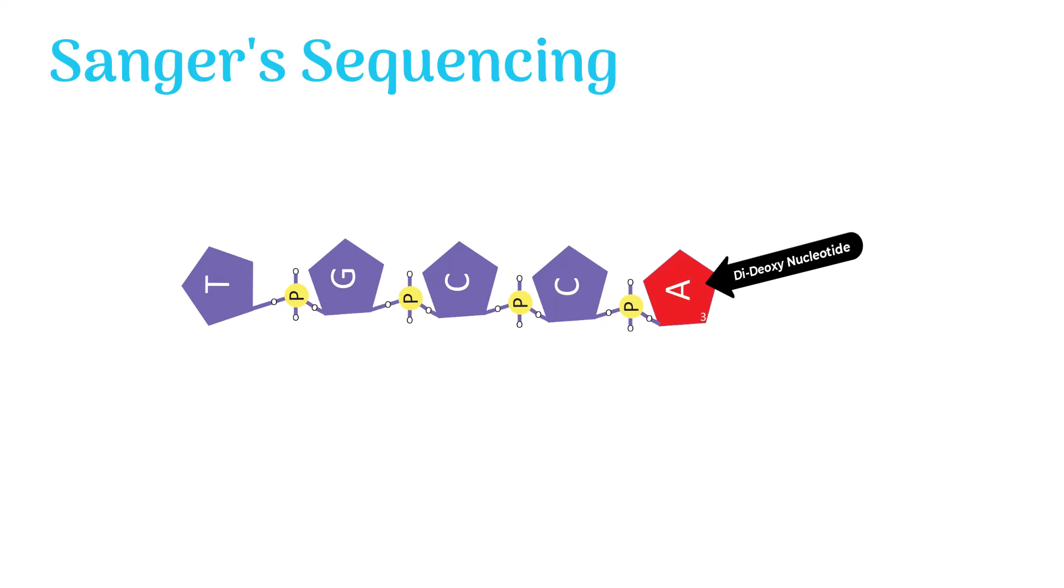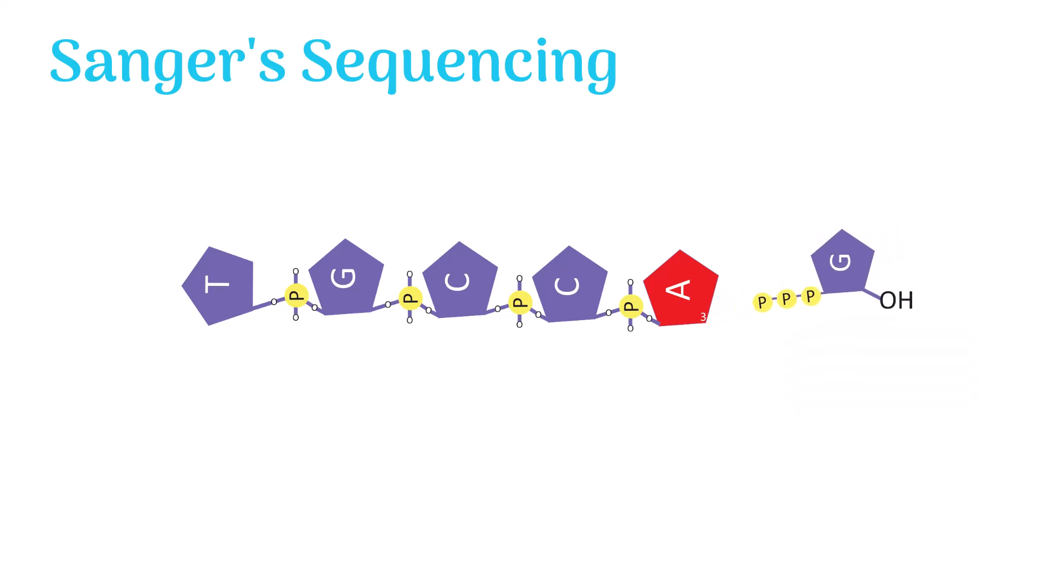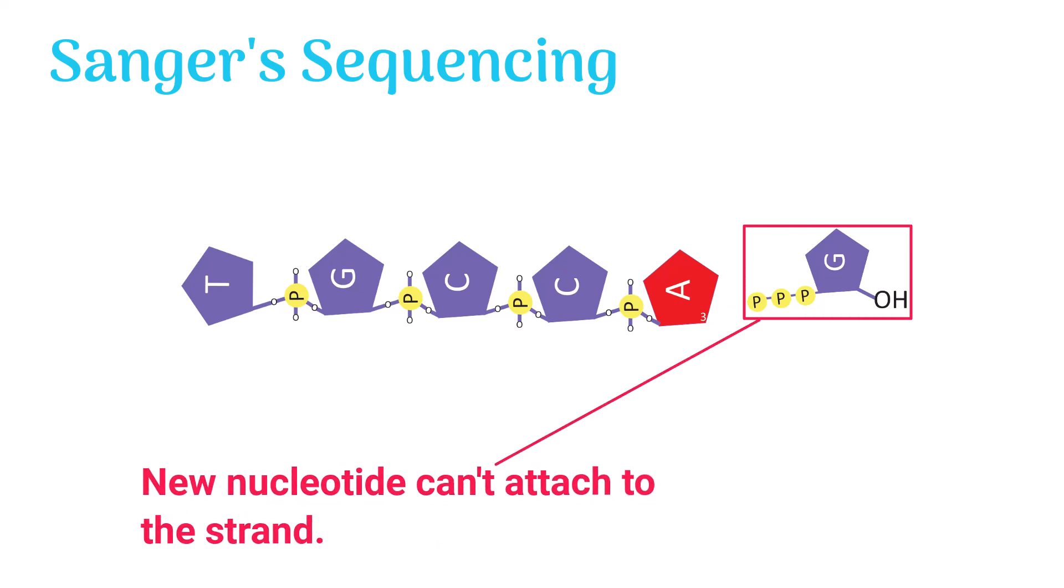When dideoxynucleotide is added to the growing strand, it lacks three prime OH group. The new nucleotide cannot attach to the strand because it requires three prime OH group to attach to. The elongation of new DNA strand terminates.